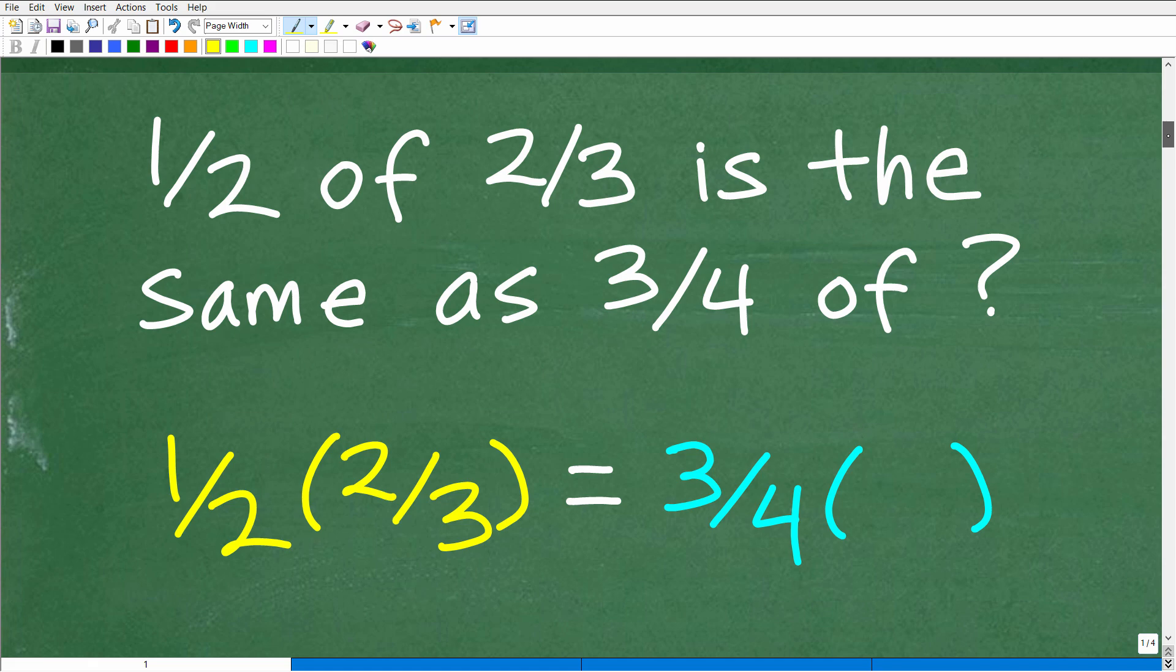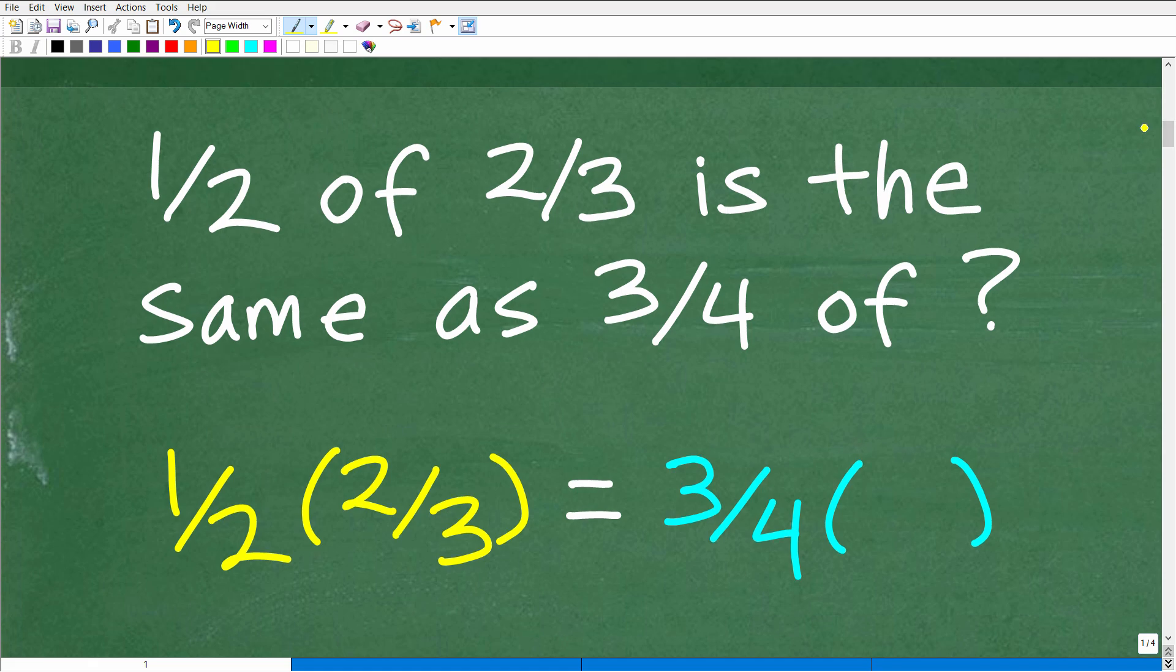So one half of two thirds is the same as three fourths of what? If I said take one half of two thirds, we have to understand this basic mathematical language. One half of two thirds, what does that mean? Well, you can see it means multiplication. What we have to do is take one half and multiply it by two thirds. So hopefully you understood that, and if you didn't, no big deal. Now you do.